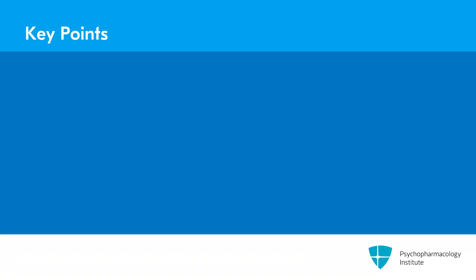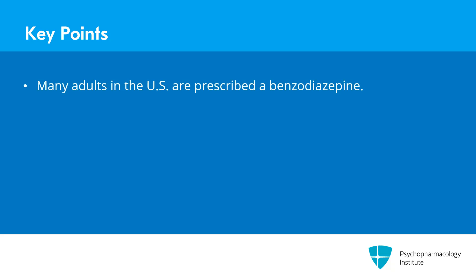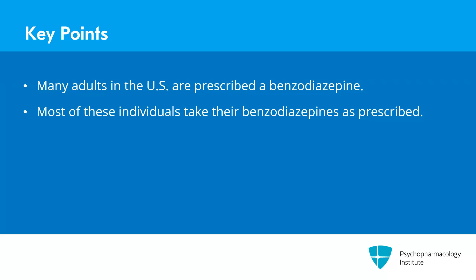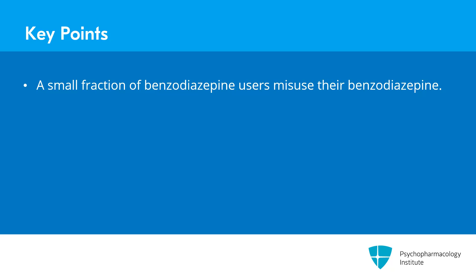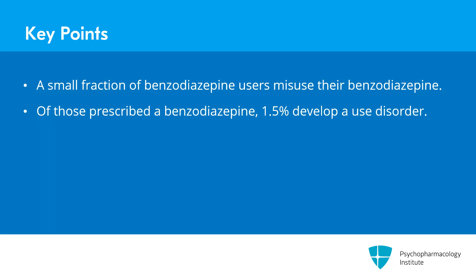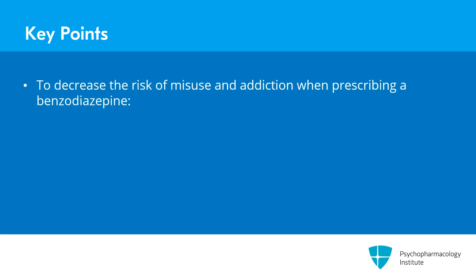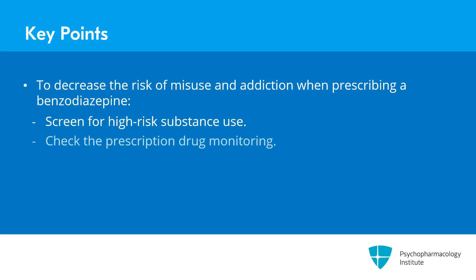To summarize the key points: many adults in the U.S. are prescribed a benzodiazepine, and over 80% take it as prescribed. A very small fraction misuse their benzodiazepine — only 1.5% of those prescribed develop a use disorder, which is 0.2% of the U.S. population. We can take steps to decrease the risk of misuse and addiction when prescribing, including screening for high-risk substance use, checking the prescription drug monitoring database, and utilizing routine drug testing.